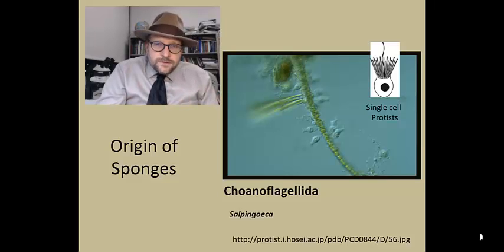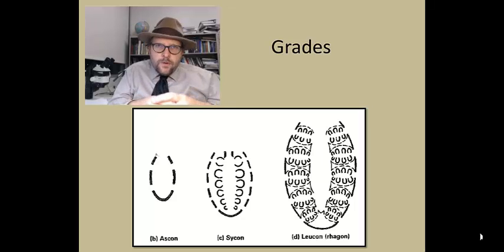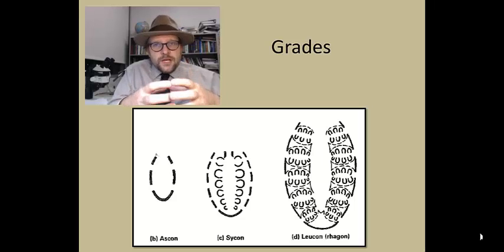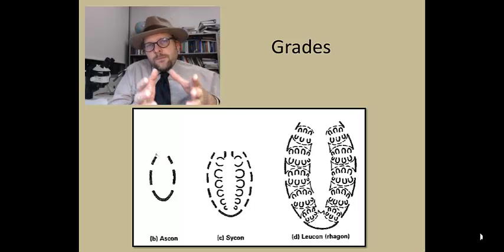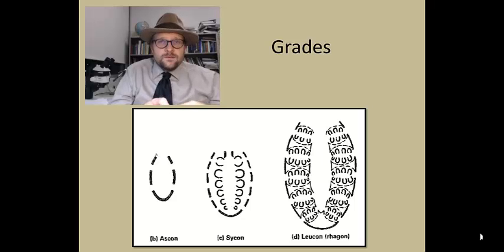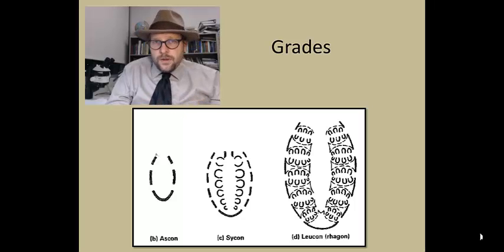Choanoflagellates are considered the closest relatives to multicellular animals and closely related to sponges. There are a number of grades or levels of complexity of sponges. The simplest are the ascon grade, where a single chamber forms; more complex is the sycon, with individual chambers lining the outer wall; and the most common but most complex is the leucon grade, which has multiple chambers opening into a central chamber. These levels of complexity are basically fractals, as each addition must maintain the central current of water flowing into the sponge, representing smaller but identical units with each level of complexity.